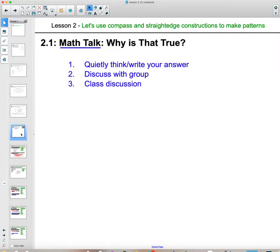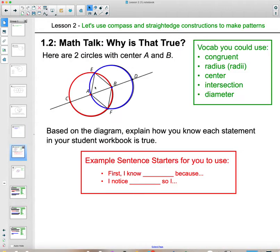If you were in class, activity 2.1 is a math talk, so you would be quietly thinking about your answer. Looking at your student workbook on page 13, it gives you two circles with centers A and B. You should be thinking about how you know the four different statements that are written there. Based on this diagram, you should be looking at how can you determine the four statements that are written there.